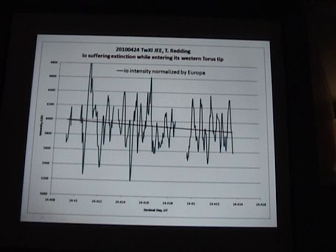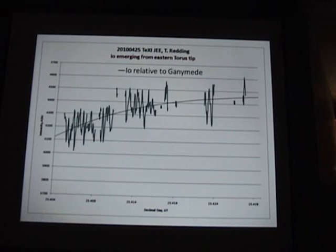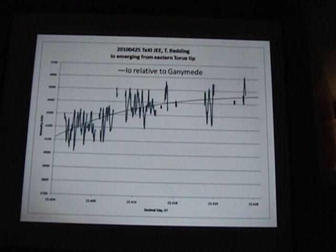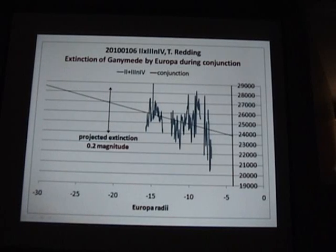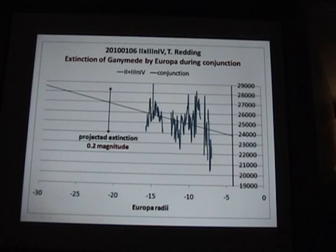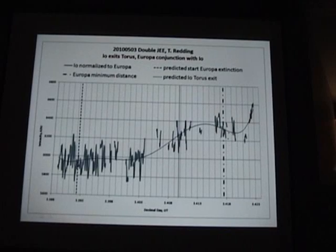Here is a dimming trend as Io is entering its western Taurus tip. Now that Jupiter's getting further away, we're getting longer data and starting to get some recovery back to normal. Here is another extinction event where Europa simply passed in a conjunction with Ganymede — it didn't occult it, just passed close enough that the extinction from Europa's atmosphere caused noted dimming, which matched our 0.2 magnitude drop when projected out.